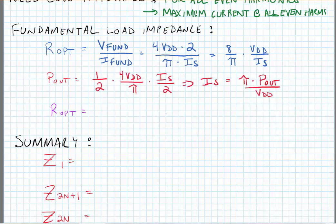The output power is the product of the RMS voltage and current of the fundamental waveforms. From this, we can invert to find the value for IS with respect to output power and the supply voltage.